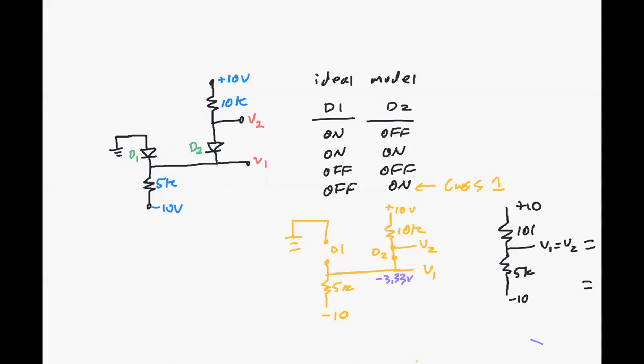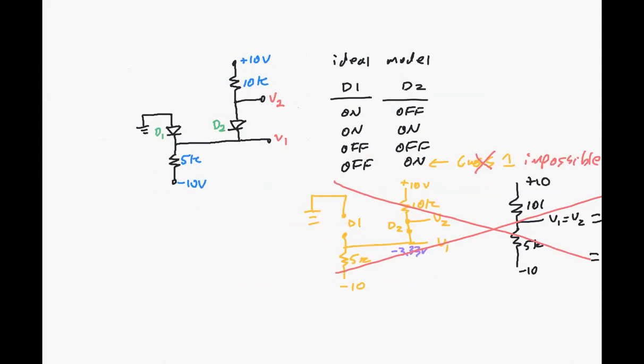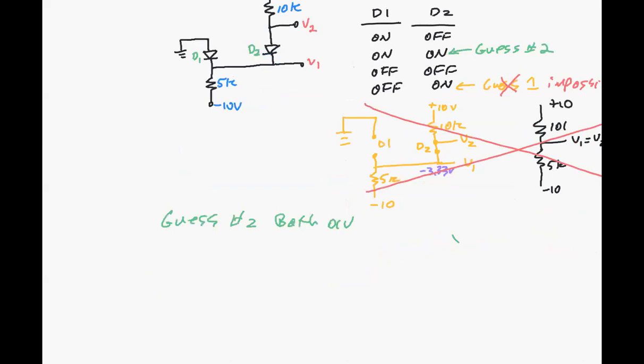And you could say that this is impossible, and don't erase it, keep this information, but you could, for instance, especially since I'm using an iPad, I could just cross it off and say that that solution is impossible. So we've got to pick another one. Because D1 needed to be on with this negative voltage there, we would have to have D1 on there. So pick another one. We'll try D1 and D2 on. So guess two.